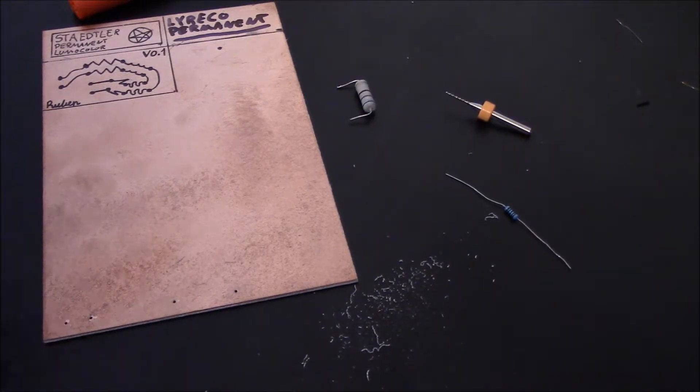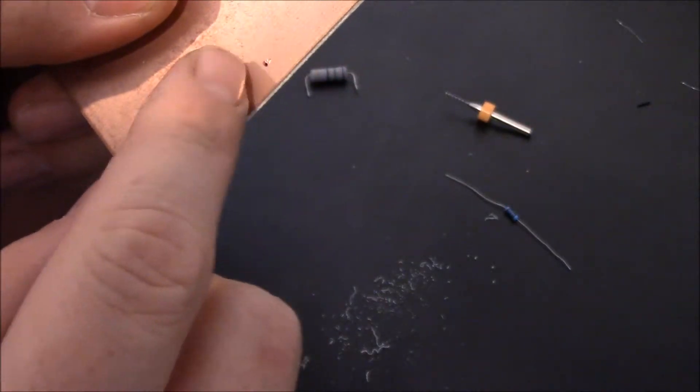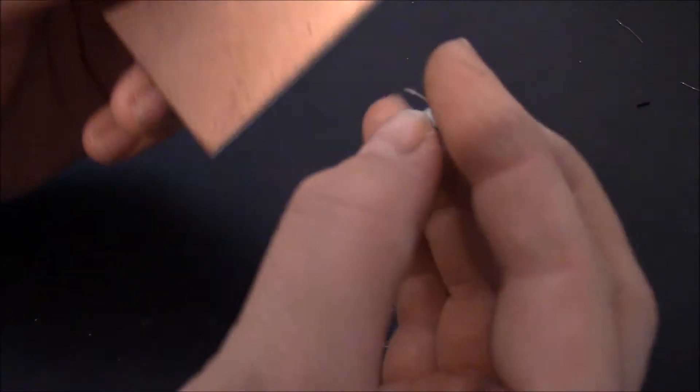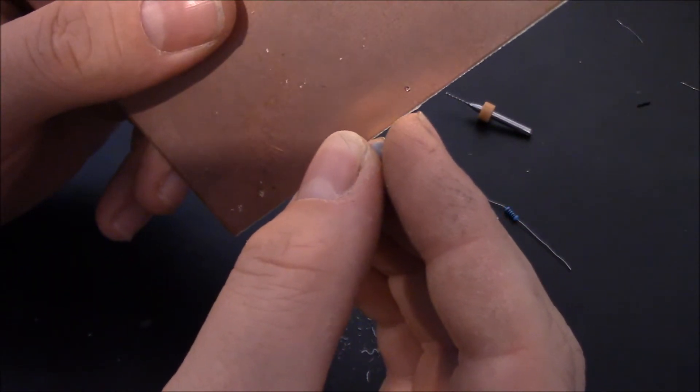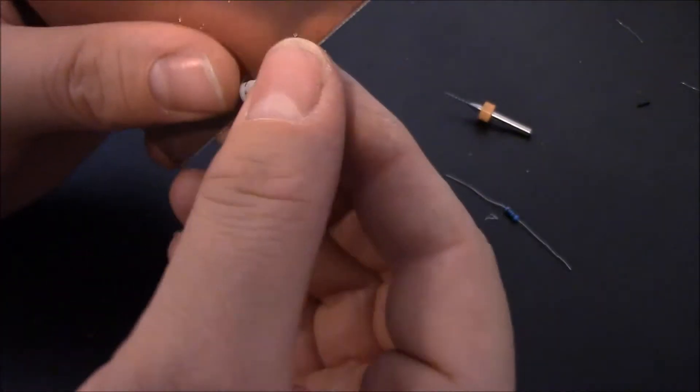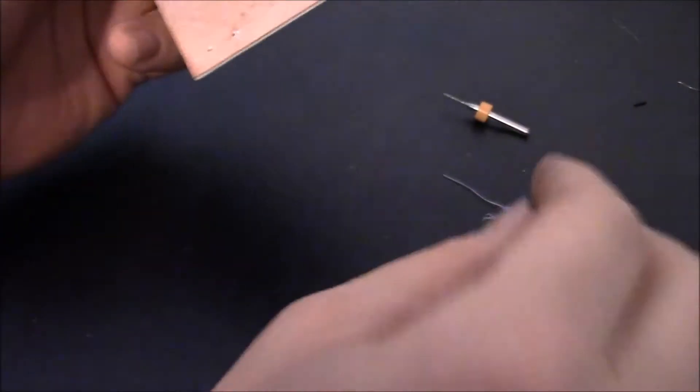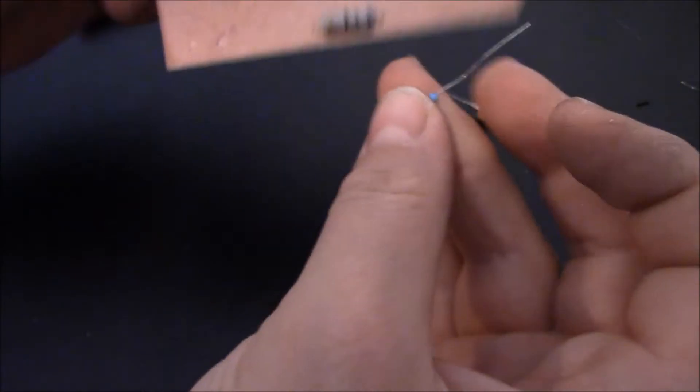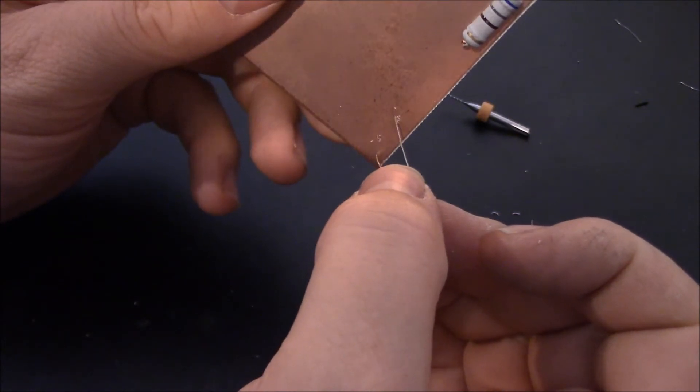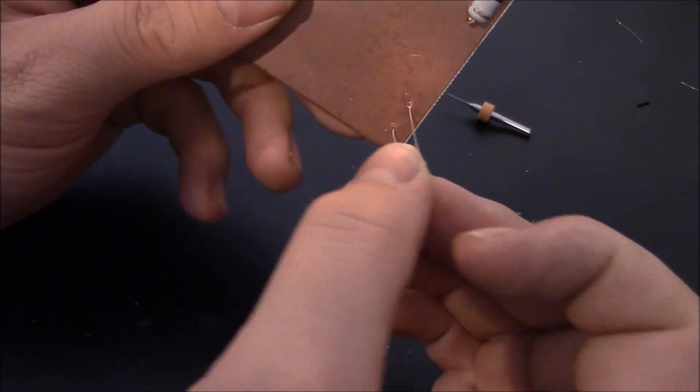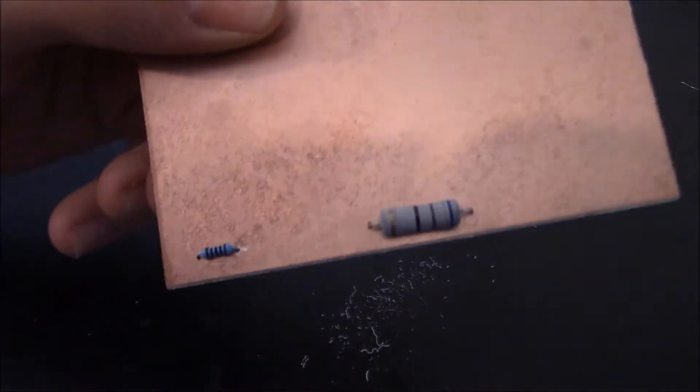That was really smooth. The drill went through really easy. Just as soon as it caught on to the copper it just went right through. Let's see. Yep, no problem. And let's try the smaller resistor in the holes I made earlier. Yep, no problem at all.